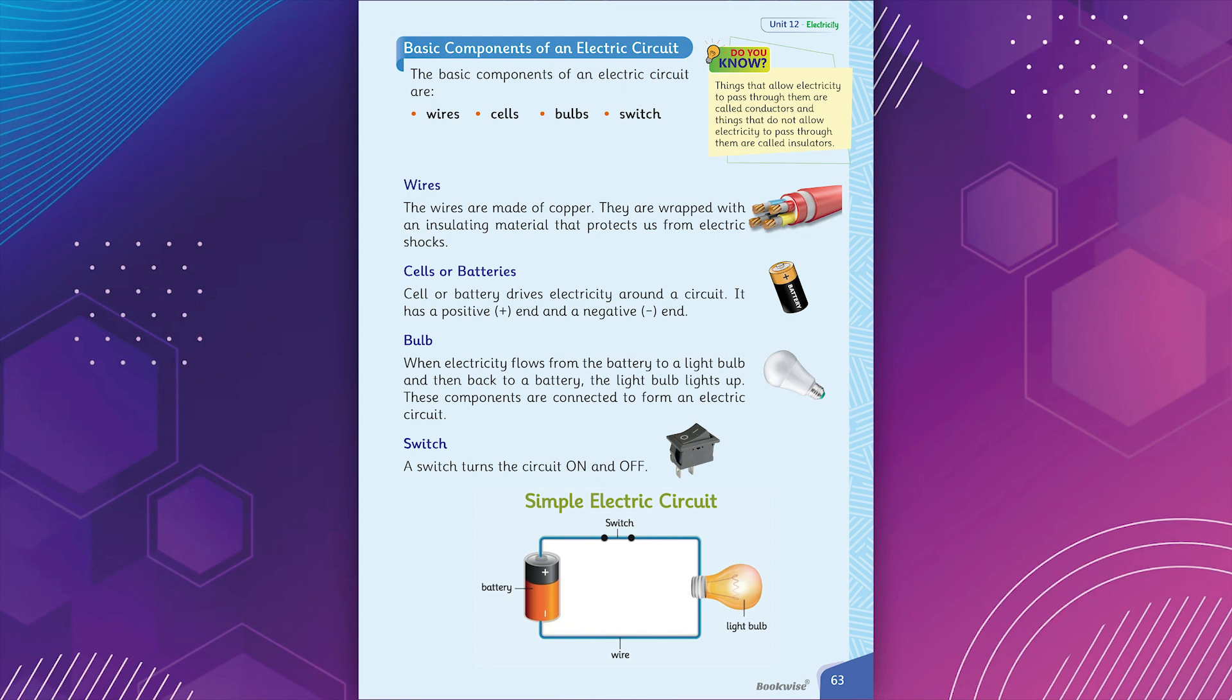Cells or Batteries. Cell or battery drives electricity around a circuit. It has a positive end (plus) and a negative end (minus).